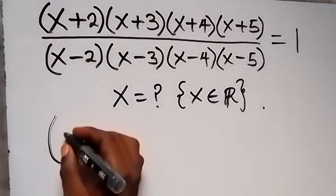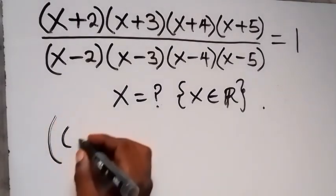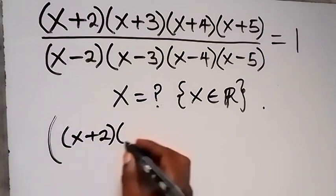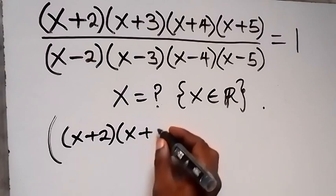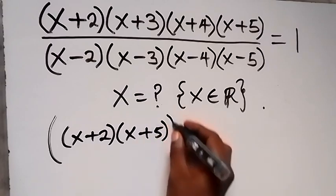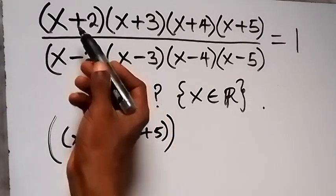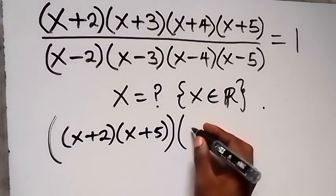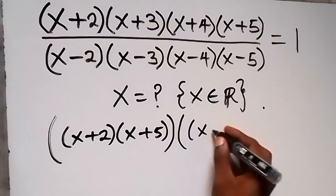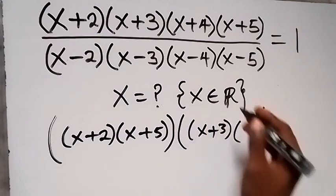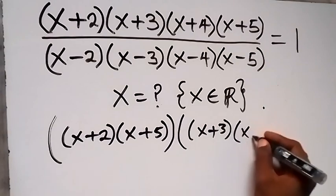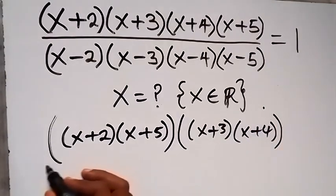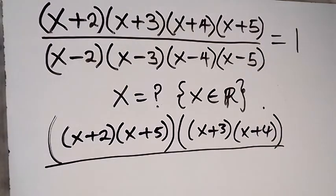From here we can rewrite this. In the numerator, we group (x+2)(x+5) together, and also we group (x+3)(x+4) together, then divided by — similarly in the denominator.